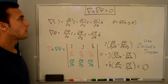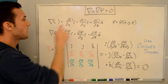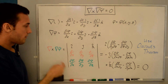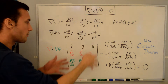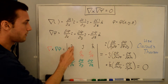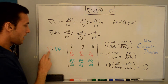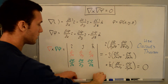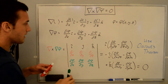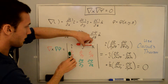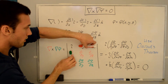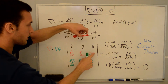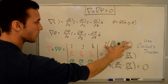Now all we want to do is take the cross product of the del operator crossed with the gradient of the scalar function. We write it in the normal way for a cross product — the determinant of this three-by-three matrix where we have the directions i, j, k, then the del operator, then the gradient of phi. Starting with the i-direction, we cross out this row and this column, and multiply this times this minus this times this, giving us the i-direction term.